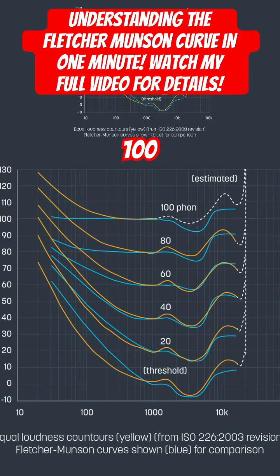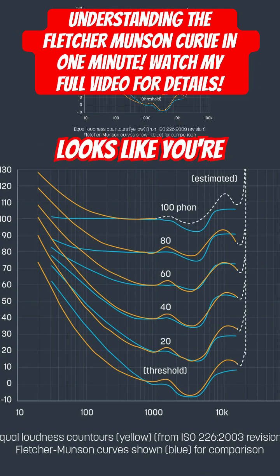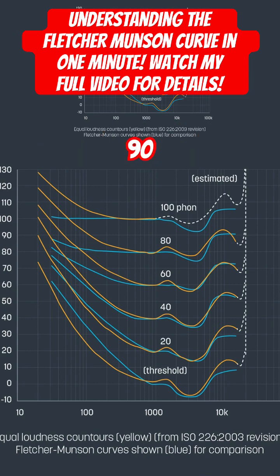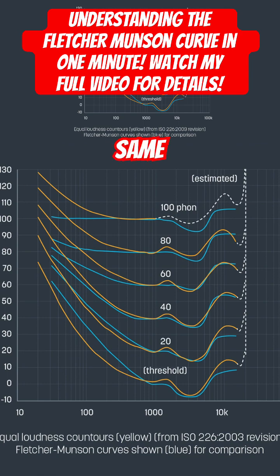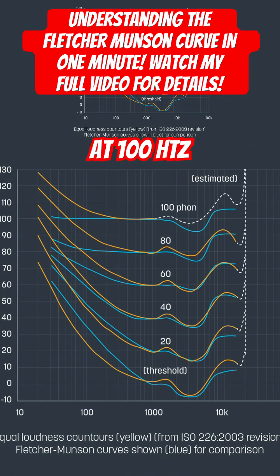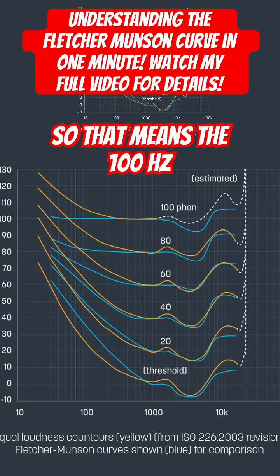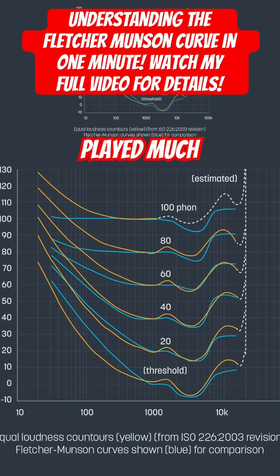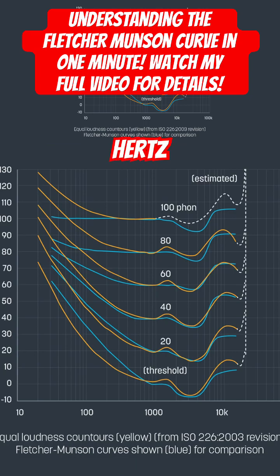But if you go down to 100 Hz, it looks like you're at about the 80 to 90 dB SPL mark to get the same perceived loudness at 100 Hz. So that means the 100 Hz tone is going to have to be played much louder than 1,000 Hz.